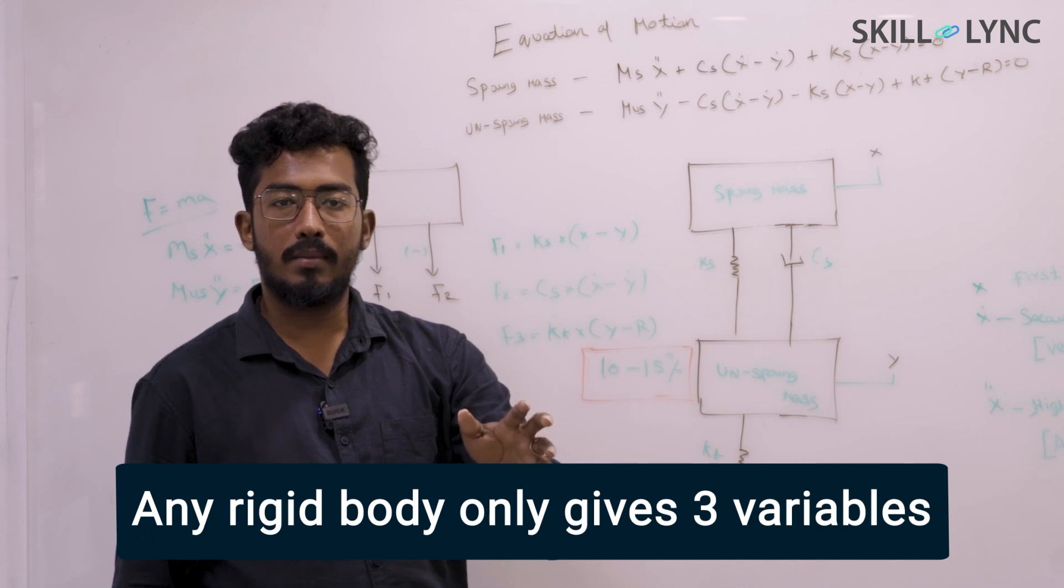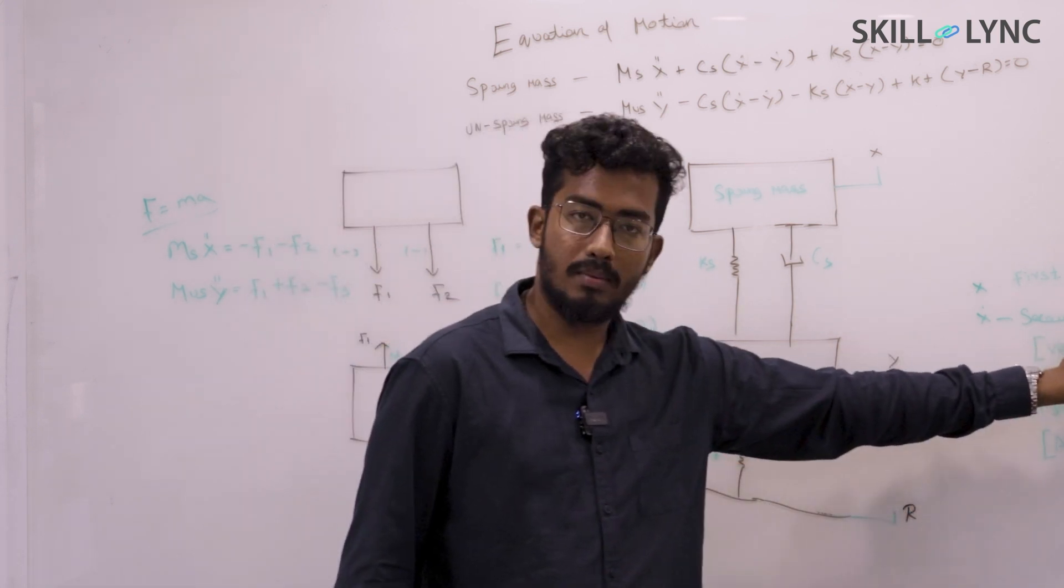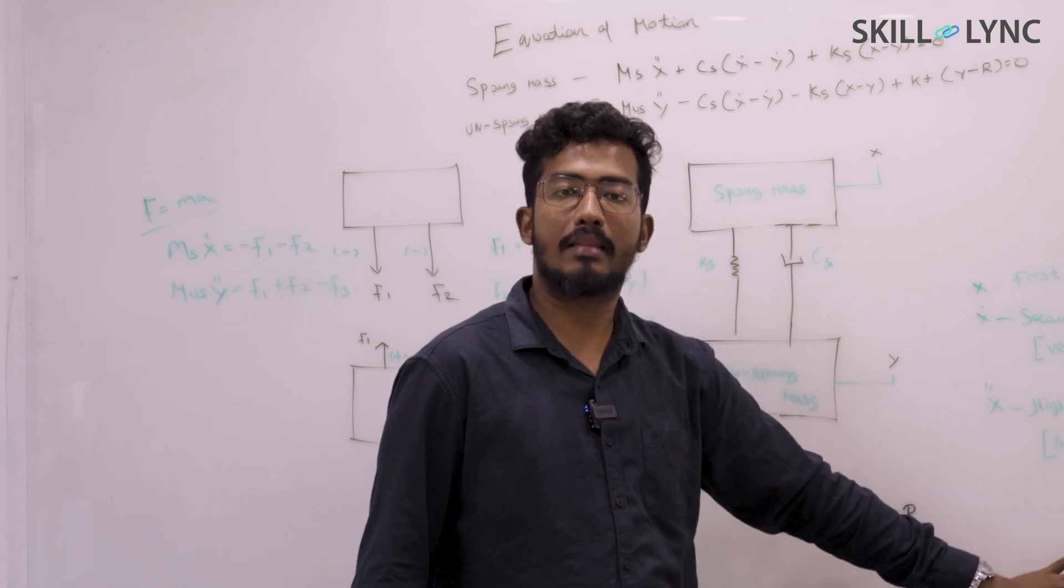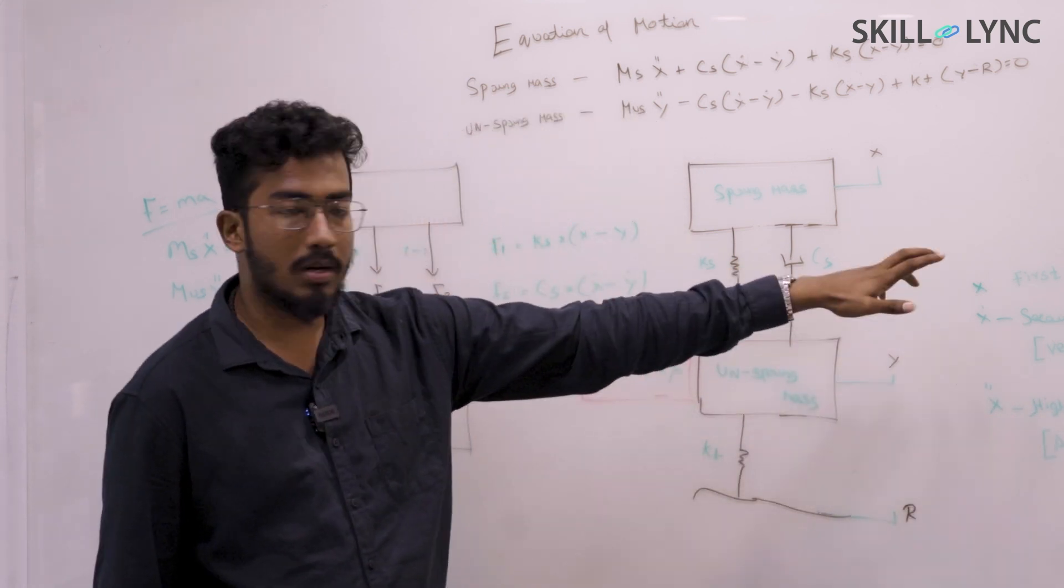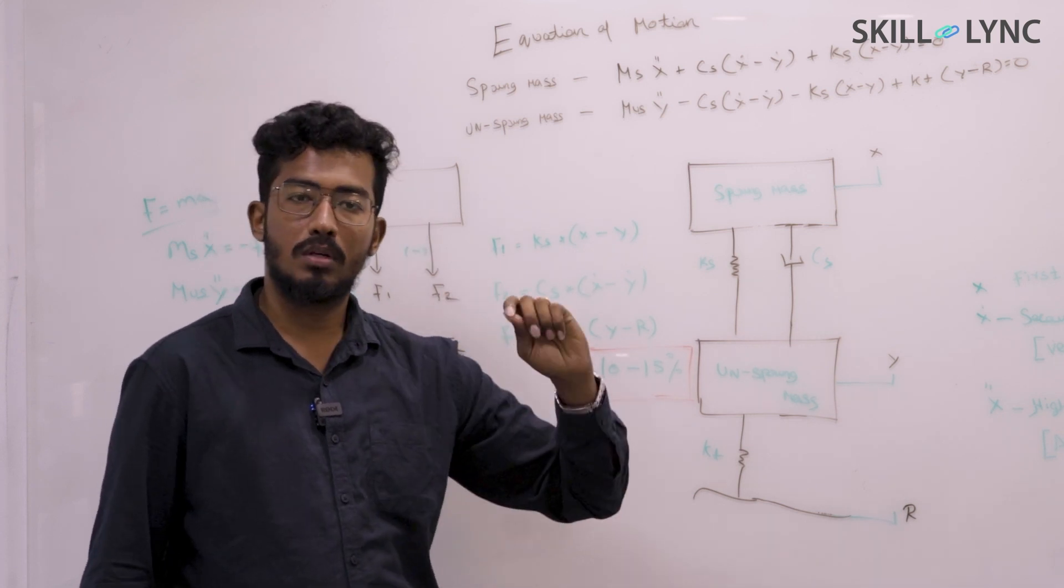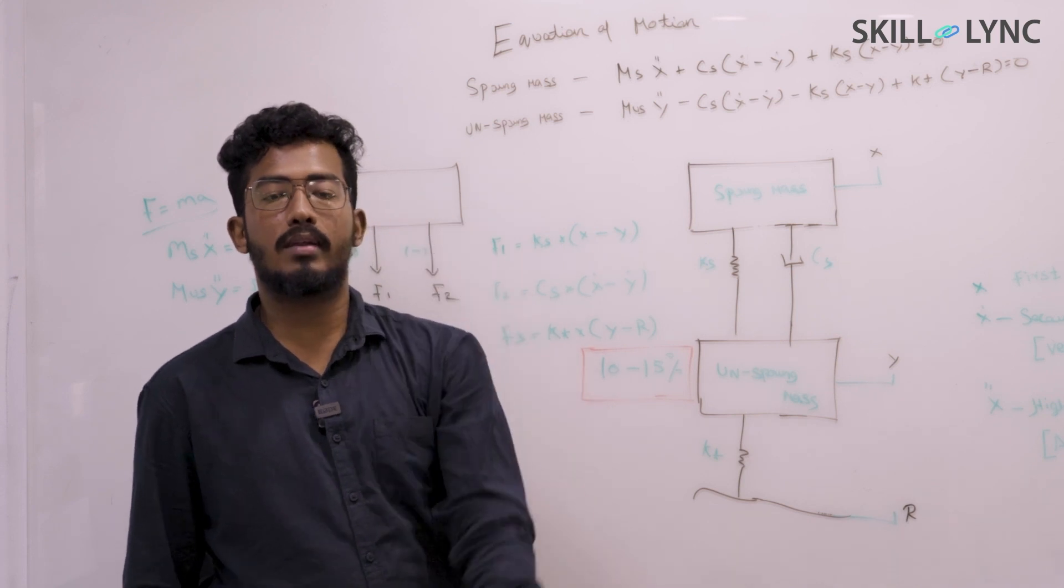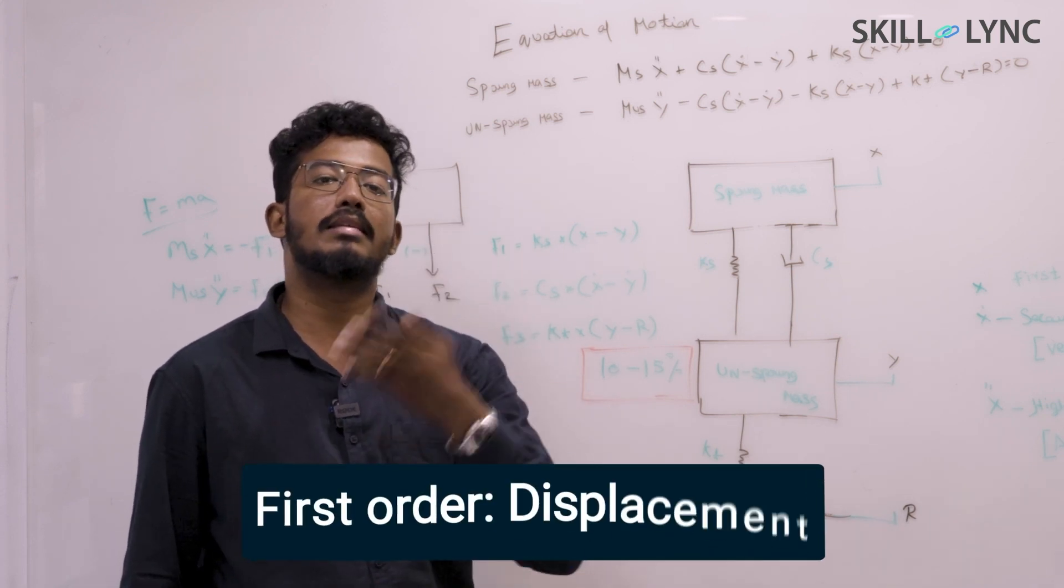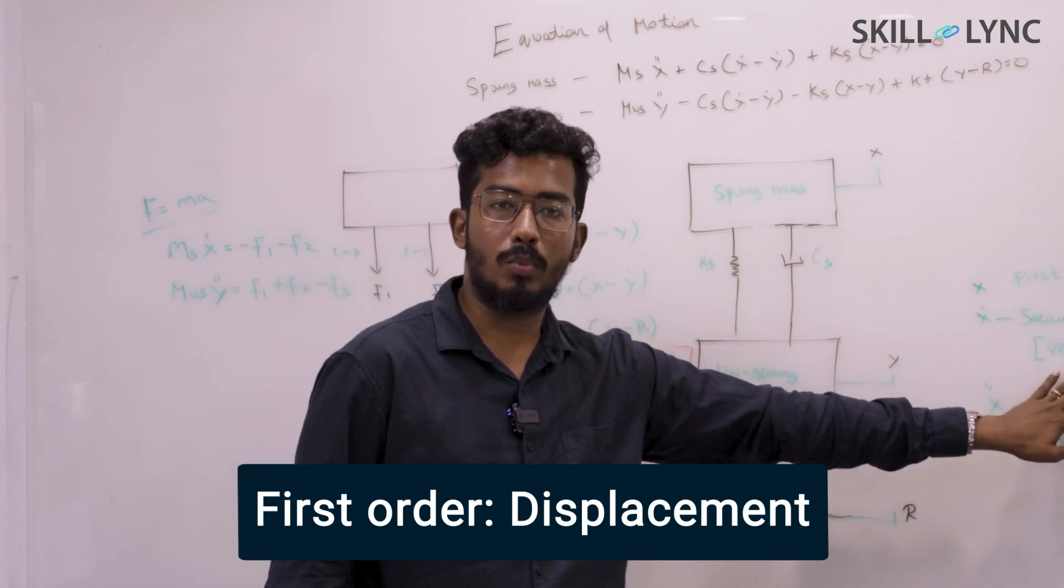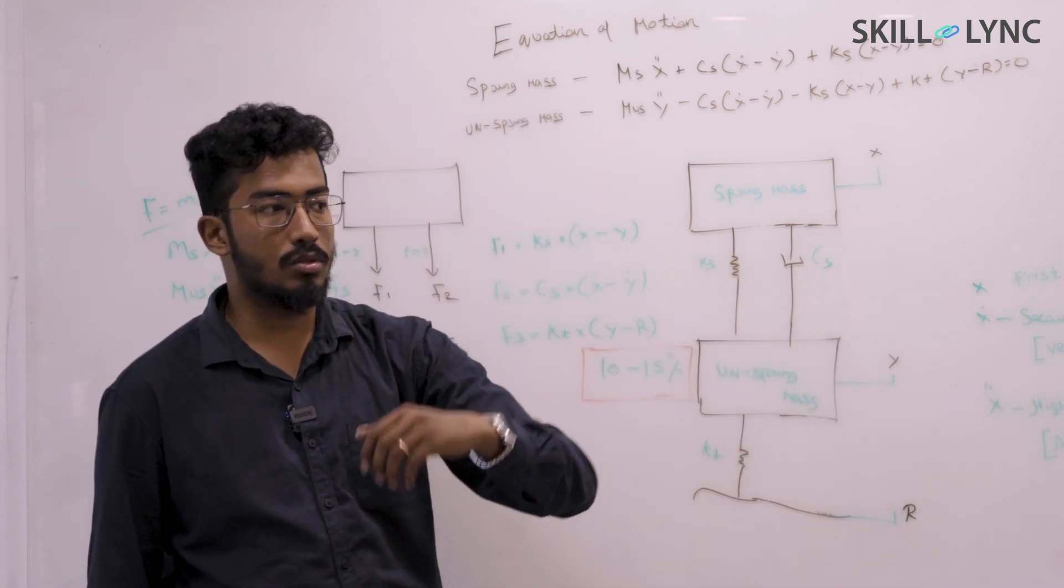Any rigid body can only get three variables: one is first order, second order, and third order. First order element is displacement - think about it: if you have a stone, you throw the stone in the air, and how do you know the rate of fall? By calculating the displacement. Second order is velocity, and third order is acceleration.